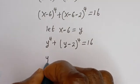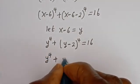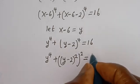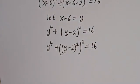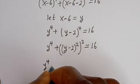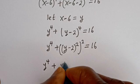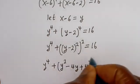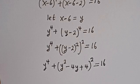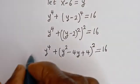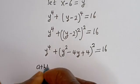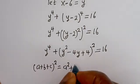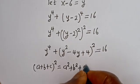This can be written as y to the power of 4 plus [(y minus 2) squared] squared is equal to 16. Expanding (y minus 2) squared gives y squared minus 4y plus 4, so we have y to the power of 4 plus (y squared minus 4y plus 4) squared equal to 16. Now, using the identity (a plus b plus c) squared equals a squared plus b squared plus c squared plus 2ab plus 2bc plus 2ac.